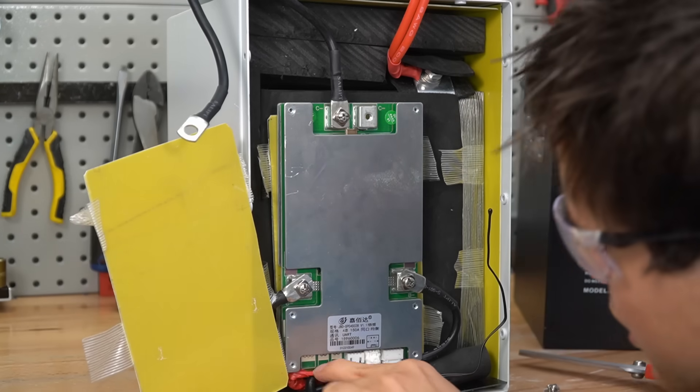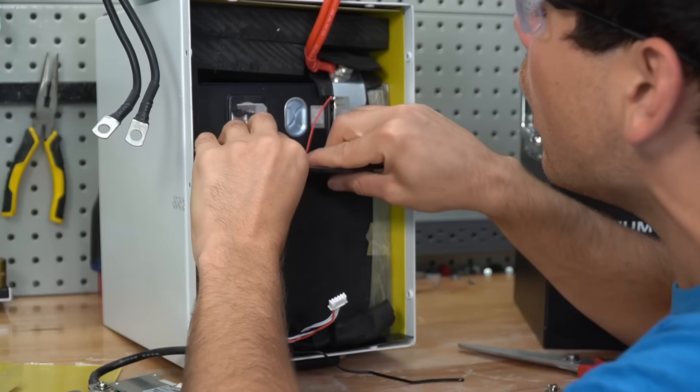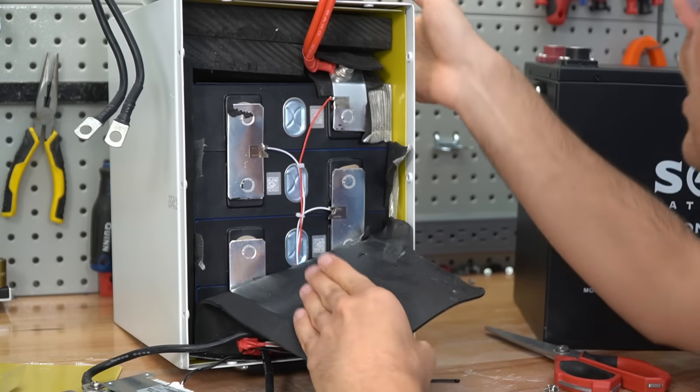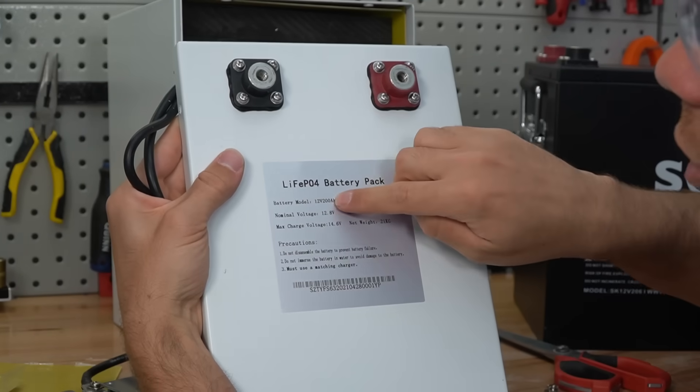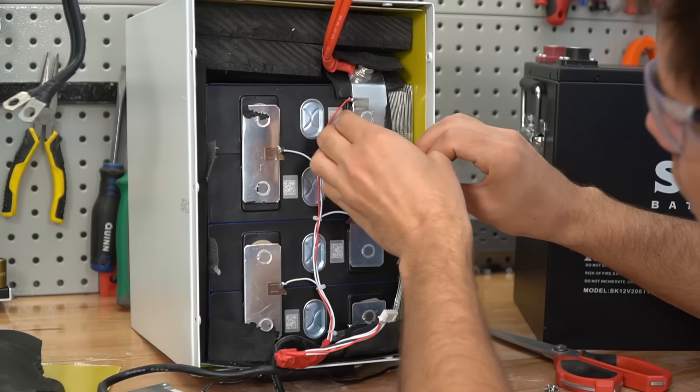Uh-oh. Look at this wiring job. Ooh, yikes. Look at that. These are 206-amp-hour cells, just like the SOK. But on the label, it says 200-amp-hours. These look brand new. These feel pretty solid.